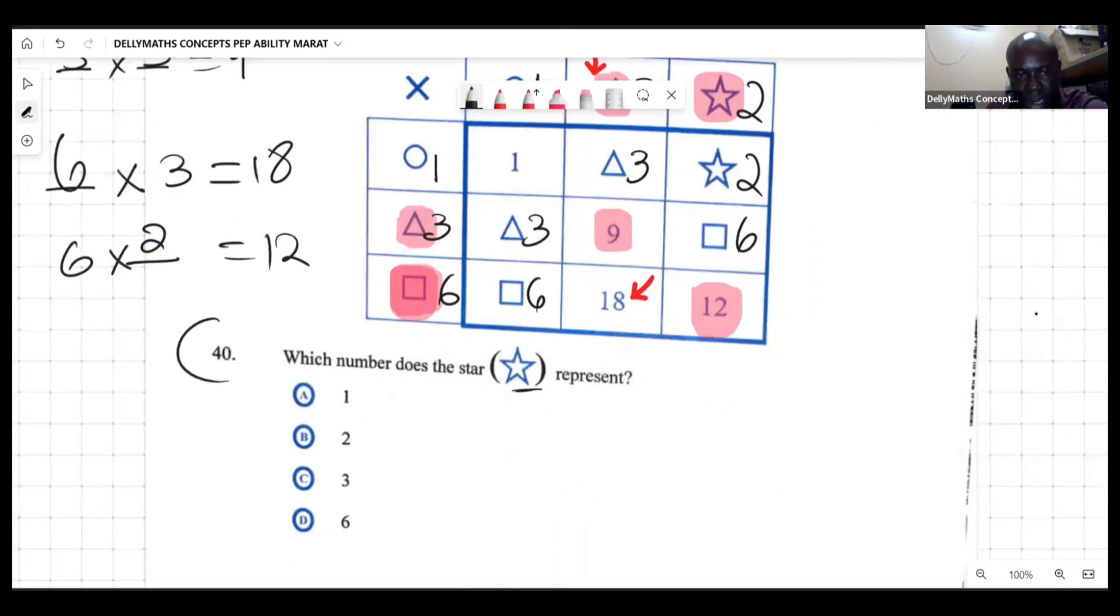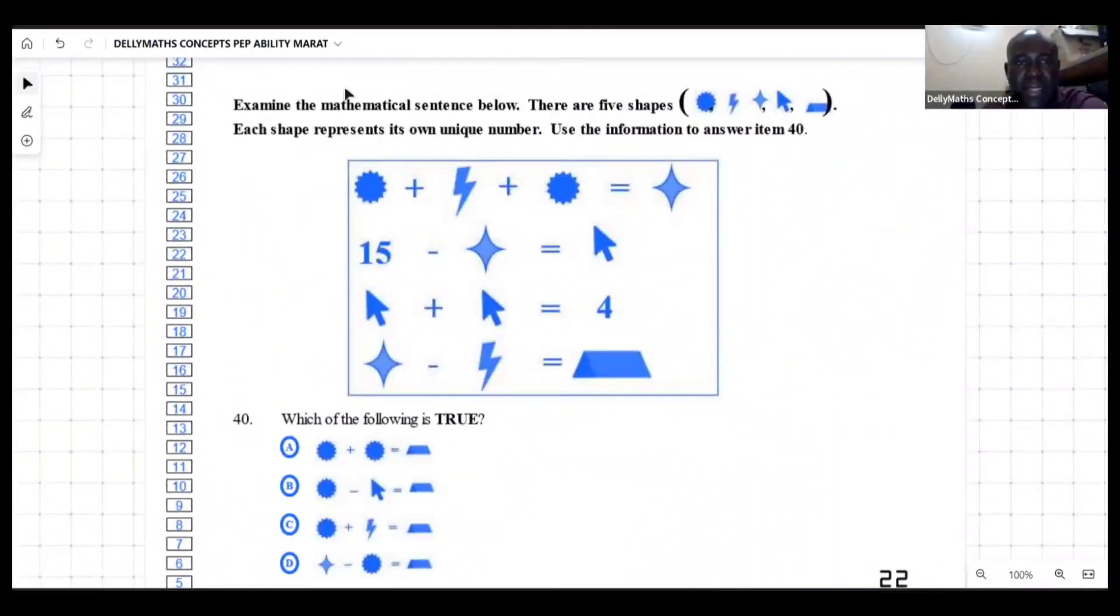It says here examine the mathematical sentence below. There are five shapes: we're looking at something that looks like a sun, a lightning, a star, an arrow, and a prism. It says each shape represents its own unique number, so no two numbers are alike here. Use the information to answer item 40.